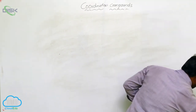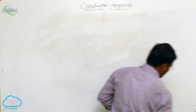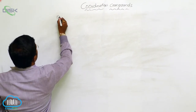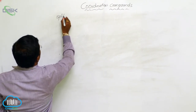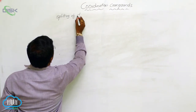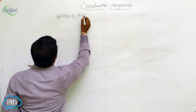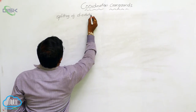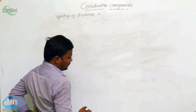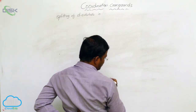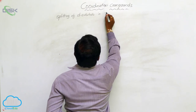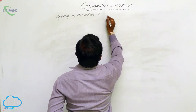This is about the formation of these complexes. The second topic is the splitting of d-orbitals in square planar and tetrahedral geometries.